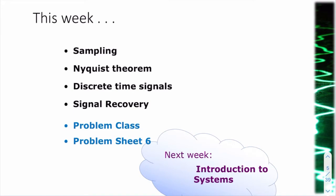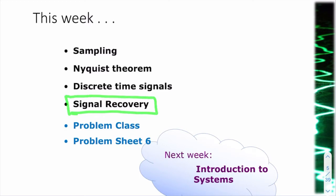This week we're not going to talk about frequency domain representations much. We will be talking about the transition from continuous time to discrete time, which is called sampling. We'll be talking about the Nyquist theorem for sampling, how discrete time signals are represented, and signal recovery or reconstruction — which is the opposite of sampling. A sampled signal needs this process to be recovered back to its continuous time original format. There'll be a problem class on Monday with a new problem sheet. Next week, we'll be talking about systems.